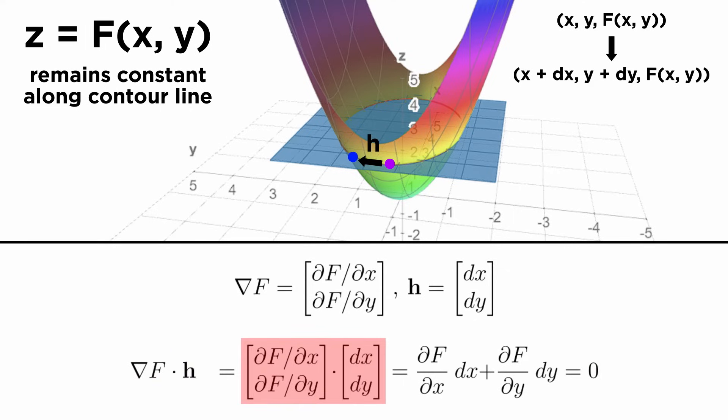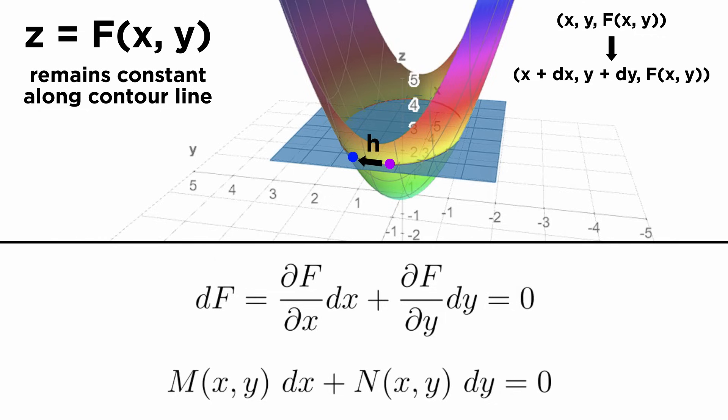We can evaluate the gradient as a vector of partial derivatives, take the dot product, and we end up with the total derivative of f, given by ∂f/∂x dx + ∂f/∂y dy = 0. From here, if we name the partial derivatives as functions M(x,y) and N(x,y), we can get something that looks a lot like a differential equation: M(x,y)dx + N(x,y)dy = 0.